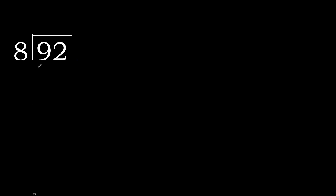92 divided by 8. 9 is not less, so we work with 9. 8 multiplied by which number is nearest to 9 but not greater? 8 multiplied by 2 is 16, which is greater. Multiplied by 1 is 8, which is not greater. 9 minus 8 is 1.